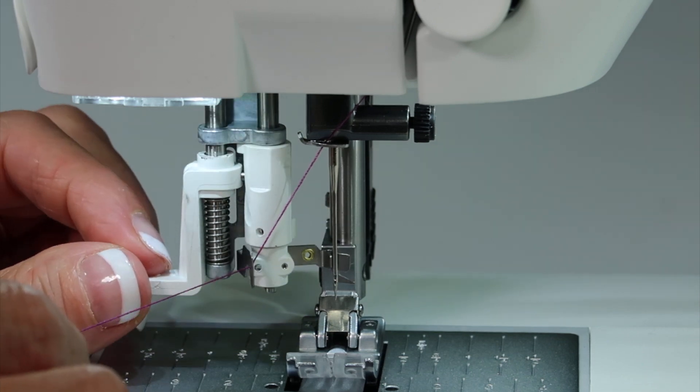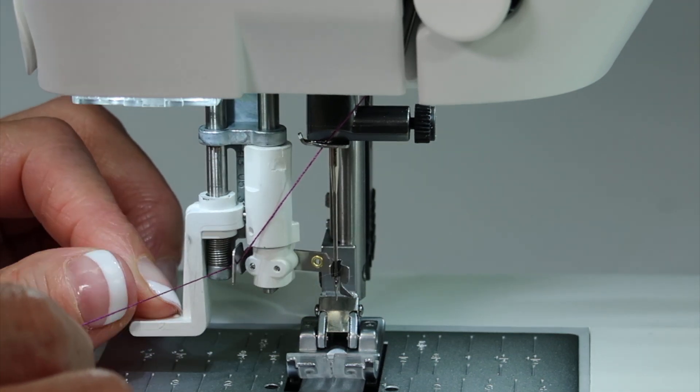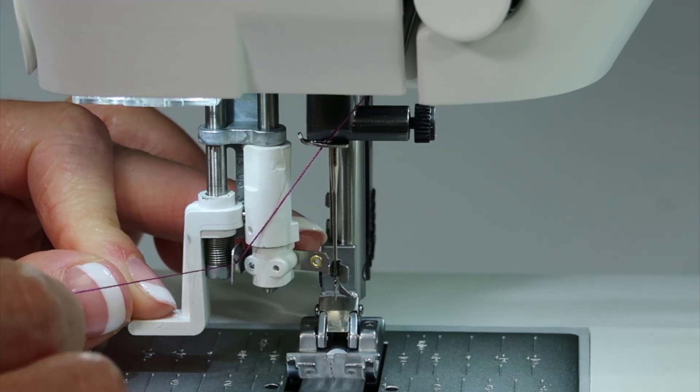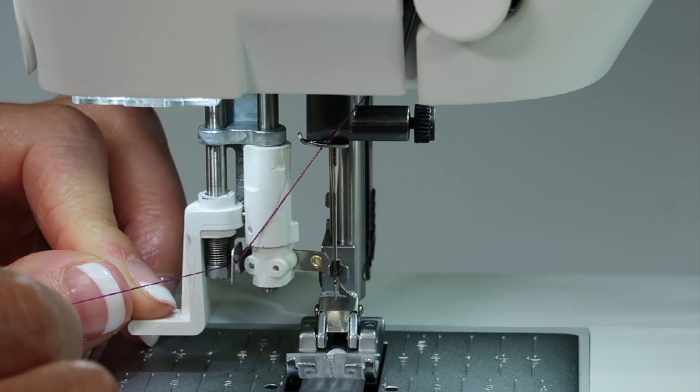Next, step two, bring the needle threader all the way down and around the needle. Now, if that doesn't line up with the hole of the needle, number one, you might not have the needle all the way inserted high enough.